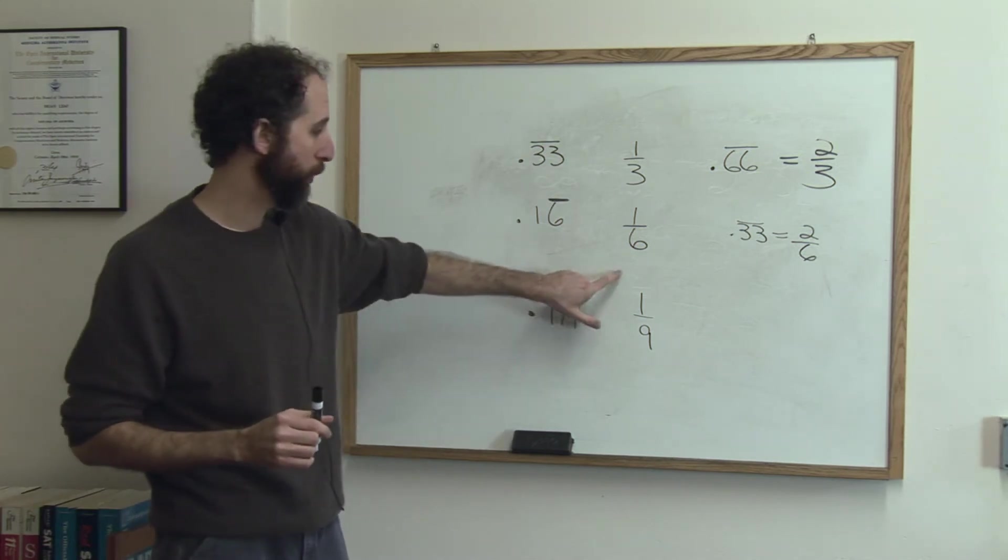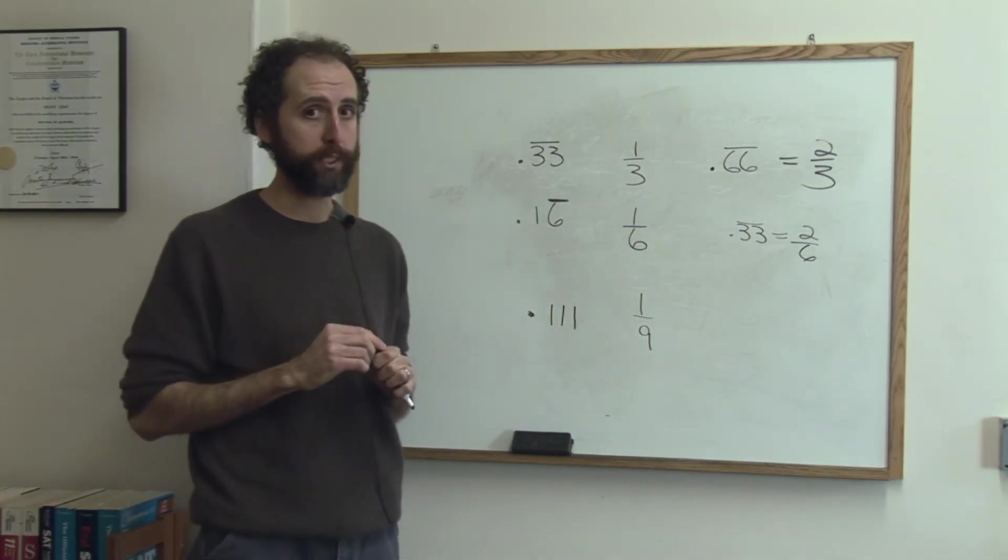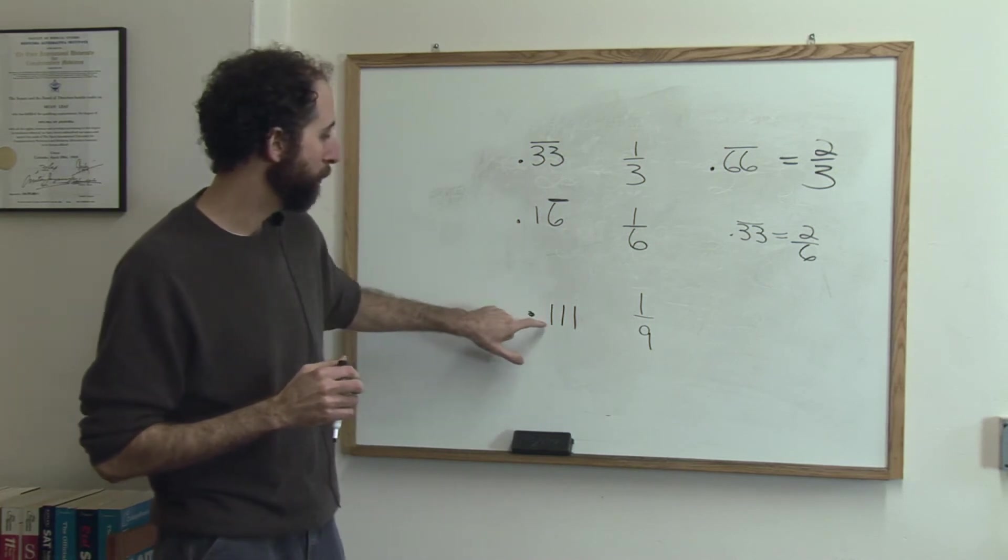The next one, the last one we need to know is one-ninth. One-ninth is a good one to memorize because it's easy. One-ninth is always .1111 repeating.